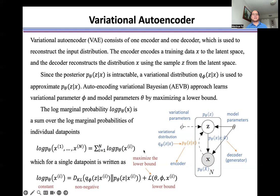The log marginal probability is the sum over the log marginal probabilities of individual data points because x1 to xn are independent.